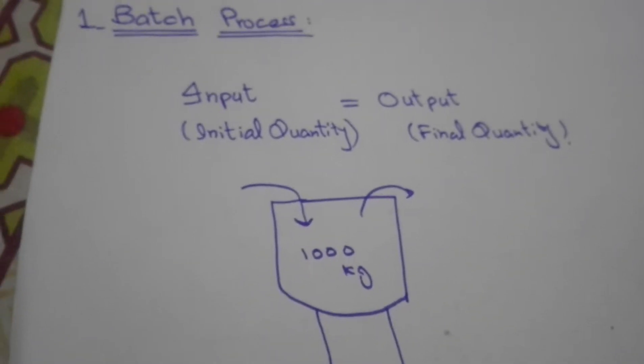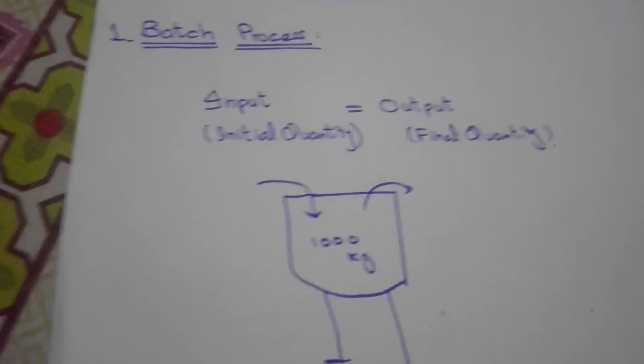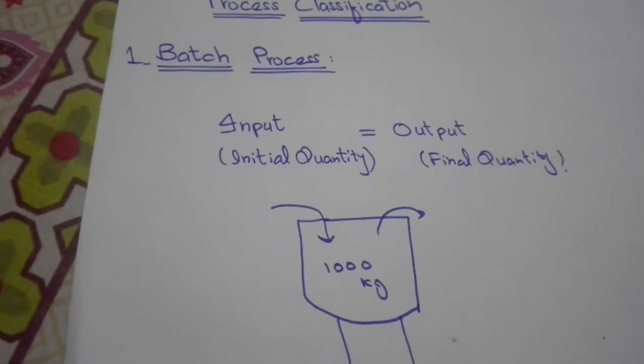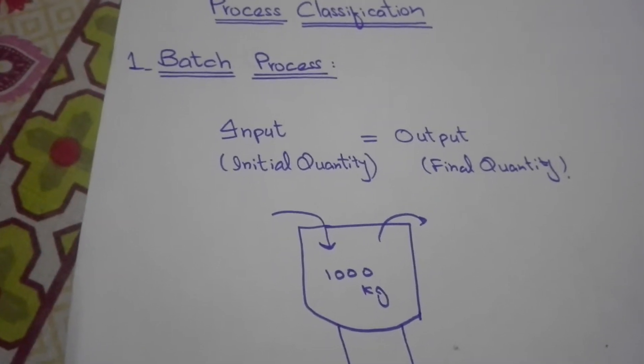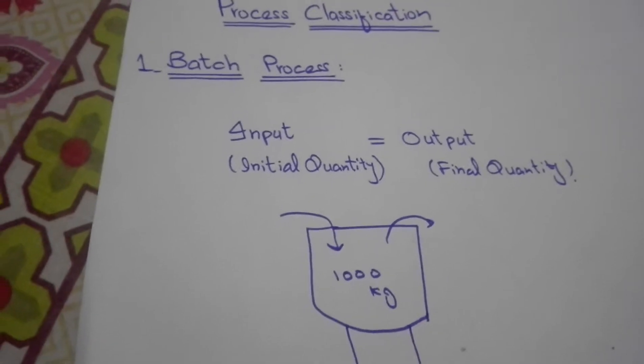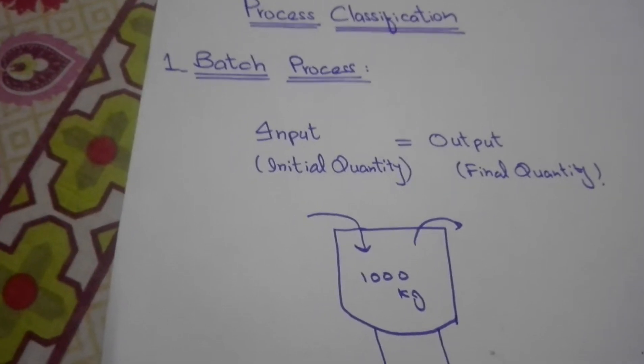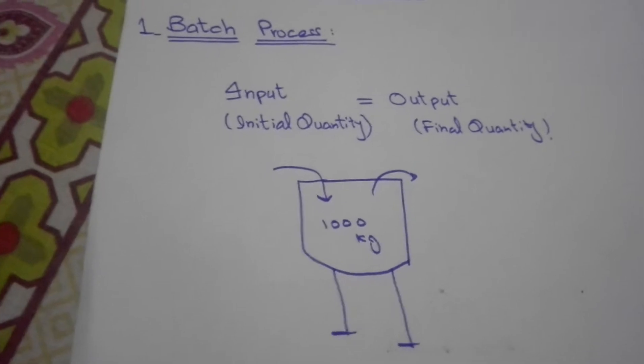Batch process is such a process that the feed is charged into a vessel at the beginning of the process, and the vessel contents are removed some time later. We add input into the system, add the feed.